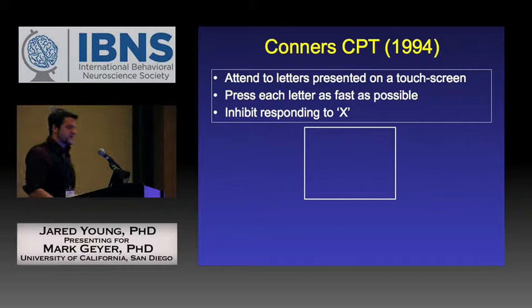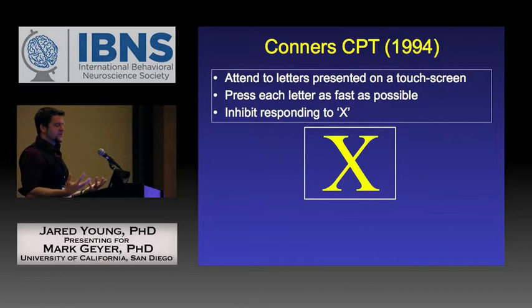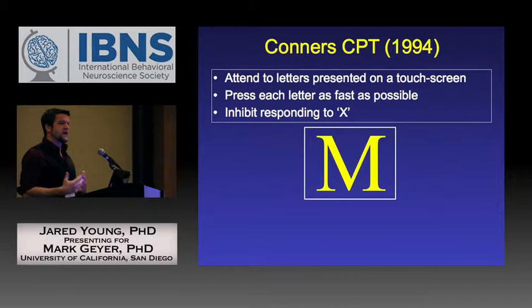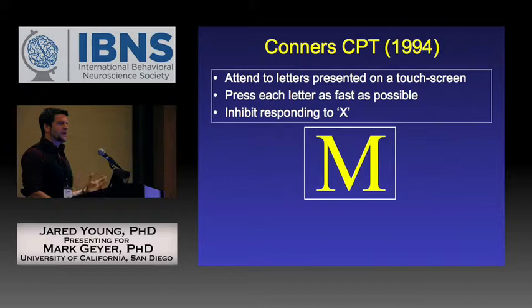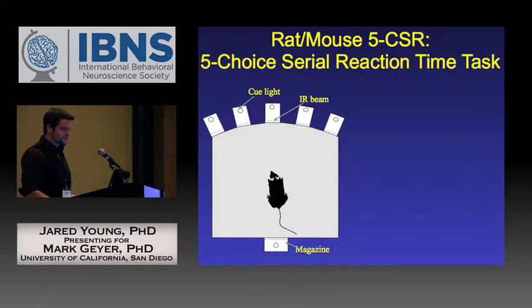An example is the Conners CPT, where subjects respond whenever a letter appears except when the letter X appears — then they must inhibit responding. This provides measures of hit rate, false alarm rate, and D-prime. Both target and non-target responses give a better idea of whether the subject is attending and of their inhibitory response control. Improving impulse and inhibitory response control could better allow bipolar patients to manage their lives.